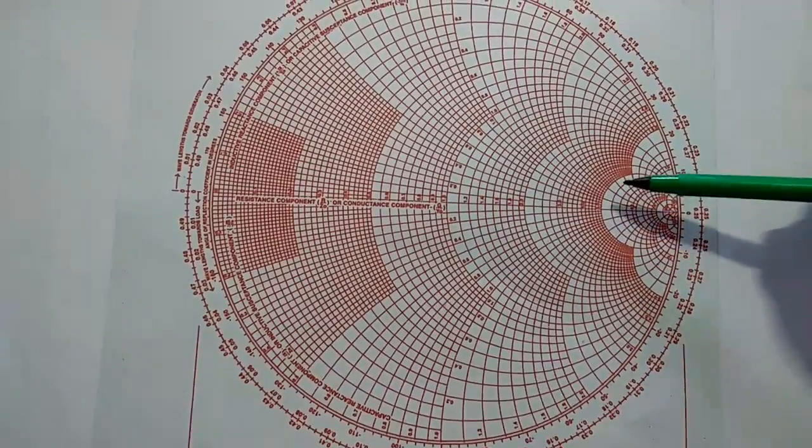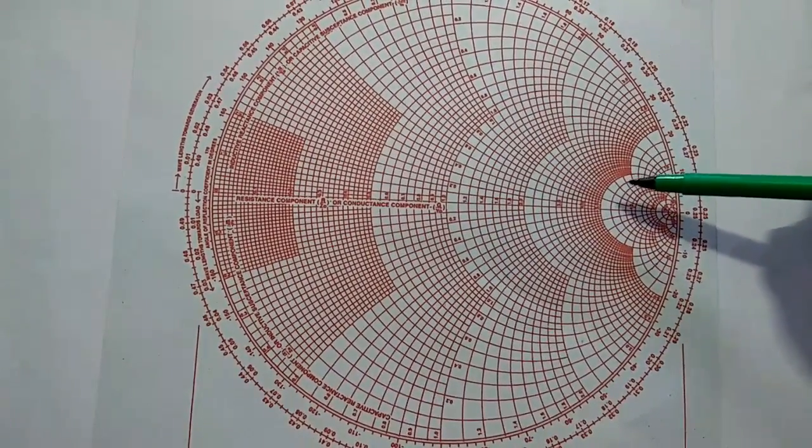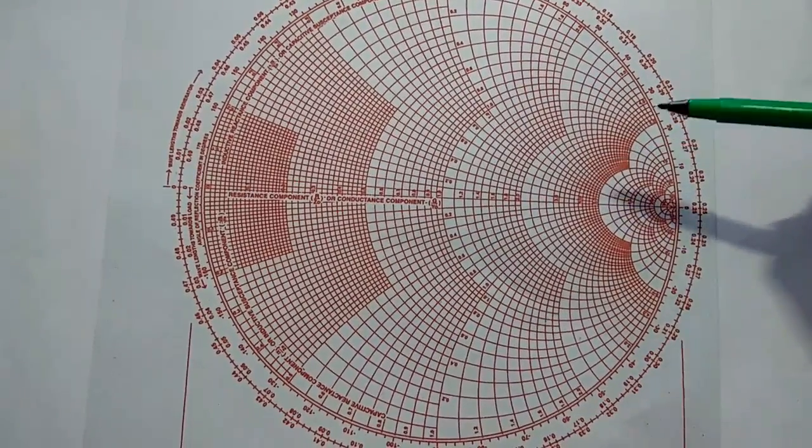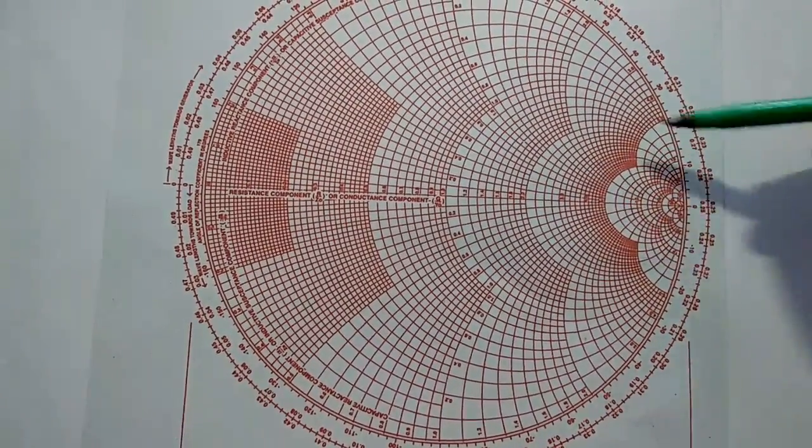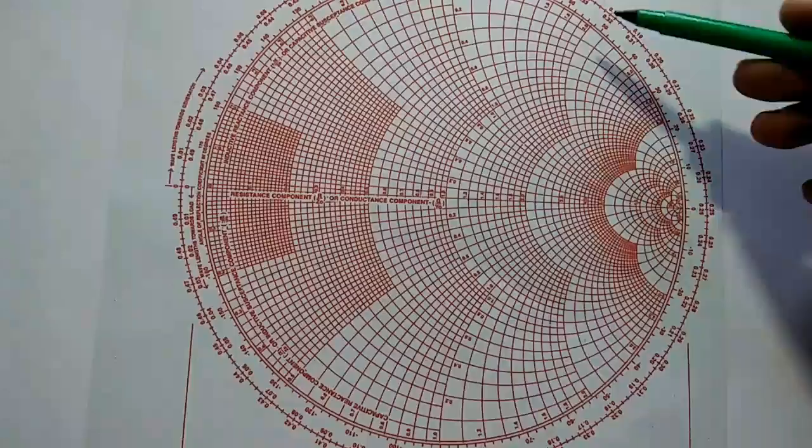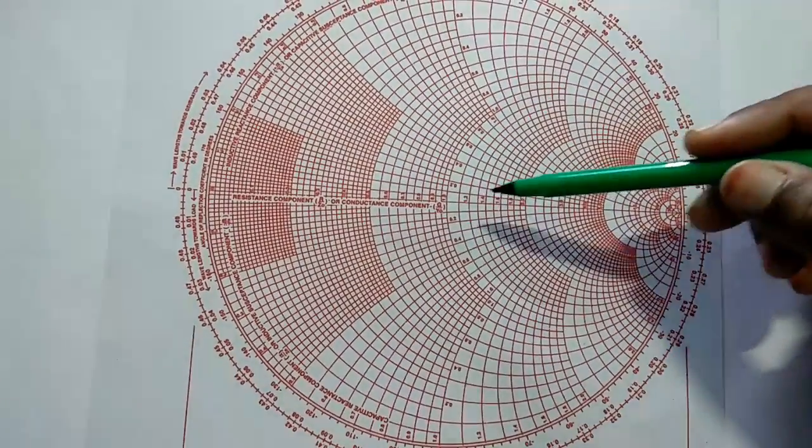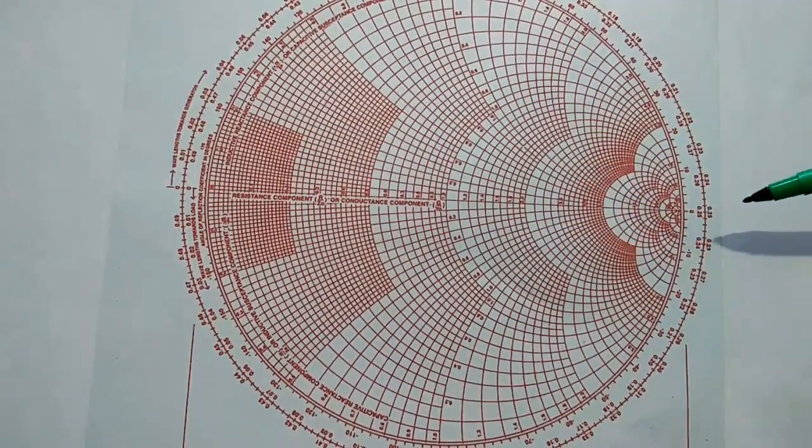This is the Smithchart where we can find the impedance and admittance of the transmission line, and the reflection coefficient. Here you can see this is the impedance circle, this one is the reactance circle, and this center line is the X equals 0 line.